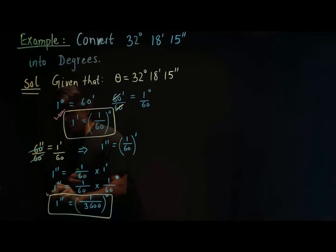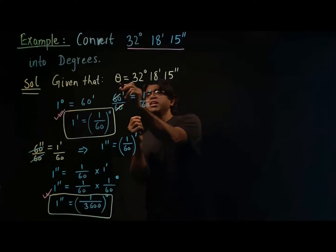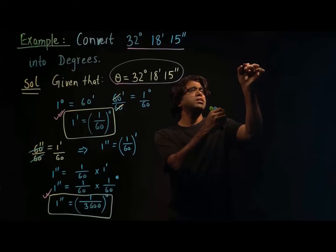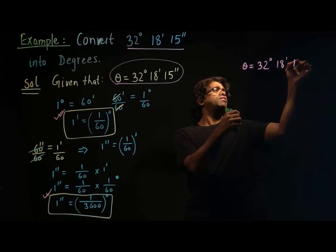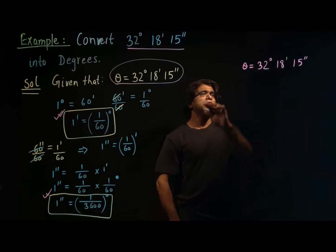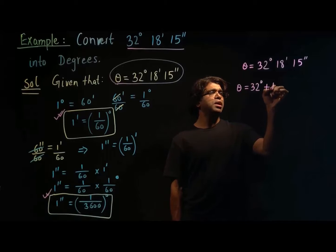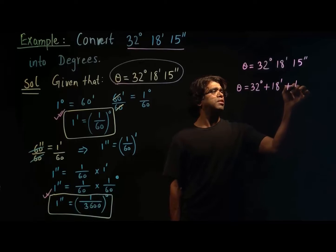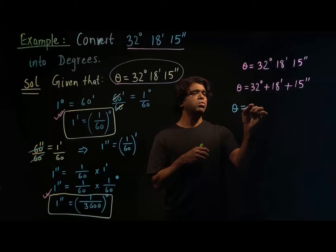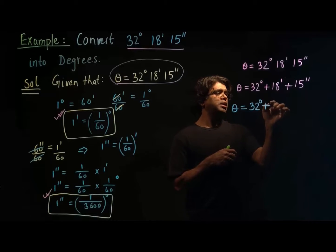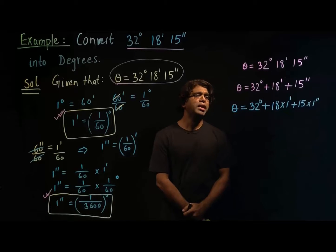We are going to use these relations to convert this angle in terms of degrees. So theta is equal to 32 degrees, 18 minutes, and 15 seconds. I can rewrite this as 32 degrees plus 18 minutes plus 15 seconds, and then again as 32 degrees plus 18 times one minute plus 15 times one second.